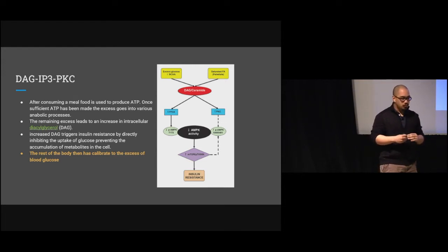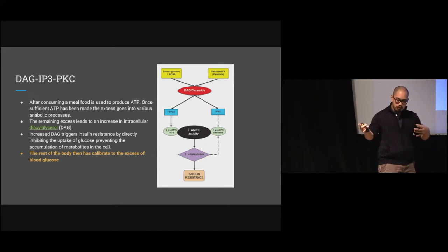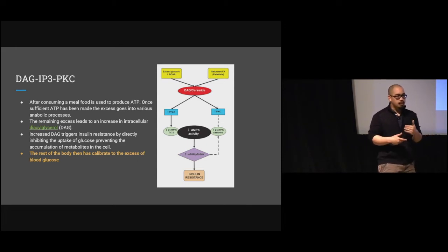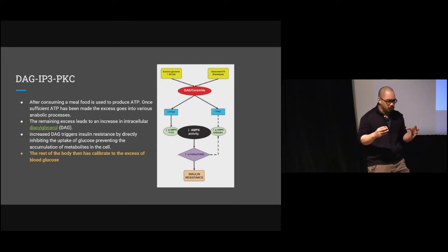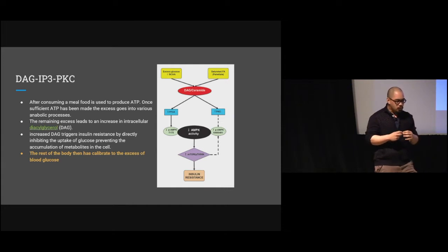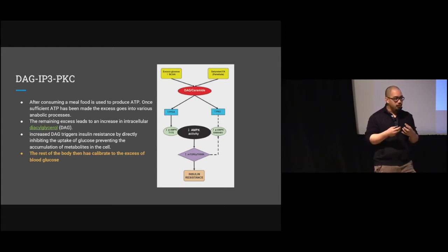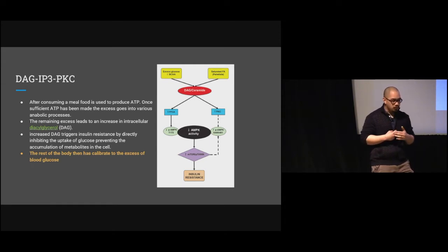The muscle gets full first, so it shunts that sugar to the liver. The liver turns it into fat and sends it to the adipose. The adipose says, 'I'm built for this,' and stores all that fat until it can't anymore. Then it begins to spill back out. When the adipose has so much fuel that it can't keep up, it blunts the insulin signal. The pancreas secretes more, but the adipose can't see it — it becomes insulin blind.